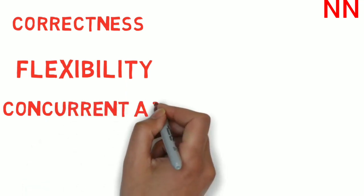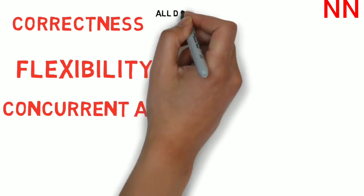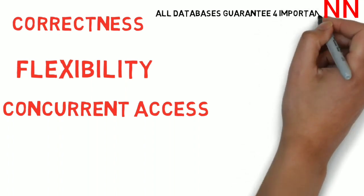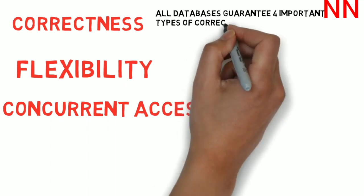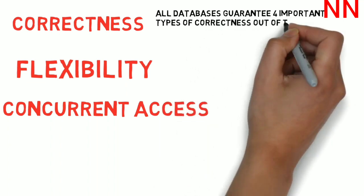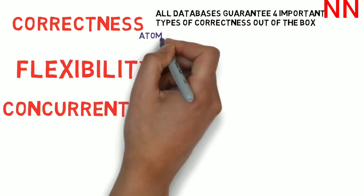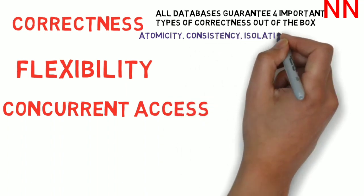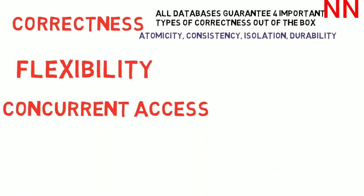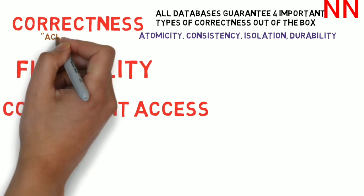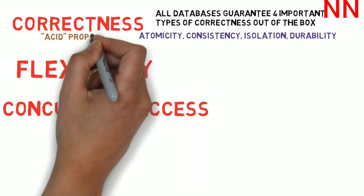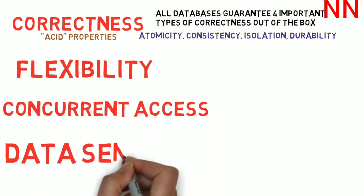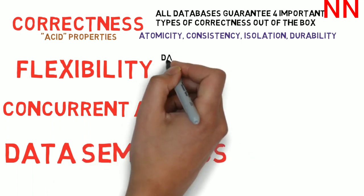Here are all the considerations that were taken into account. Correctness, flexibility, concurrent access and the semantics of how the data are related to each other. All databases guarantee four types of correctness right out of the box. These are the four important properties of database design and they are called ACID properties. The types of correctness are atomicity, consistency, isolation and durability. These four together are called ACID properties. We will not go much into what exactly the ACID properties are. But do know that because of these ACID properties, you can really trust and rely on the correctness of how the data is stored in databases.